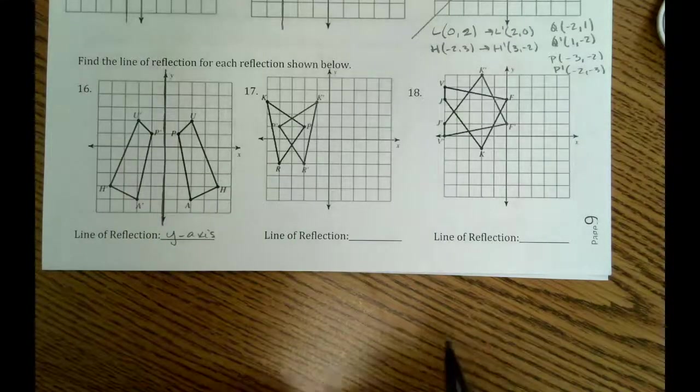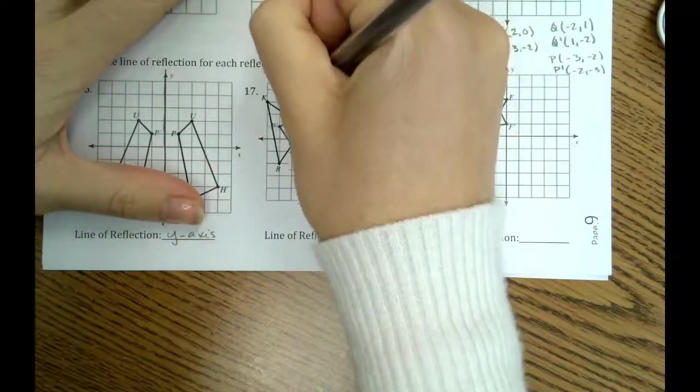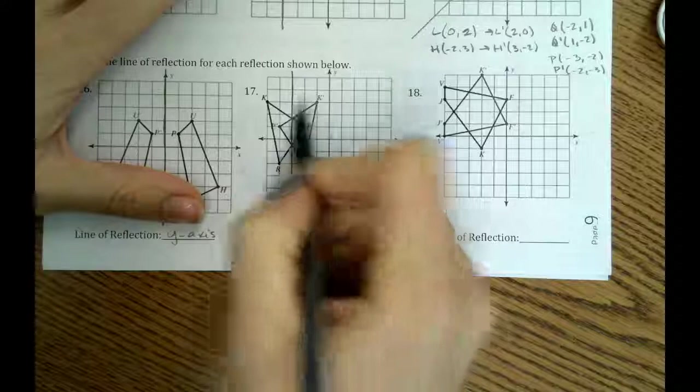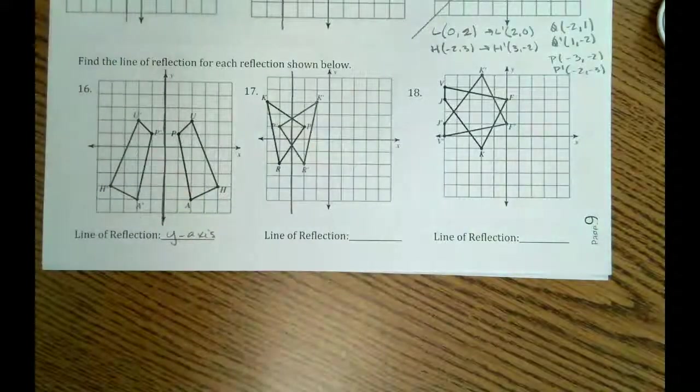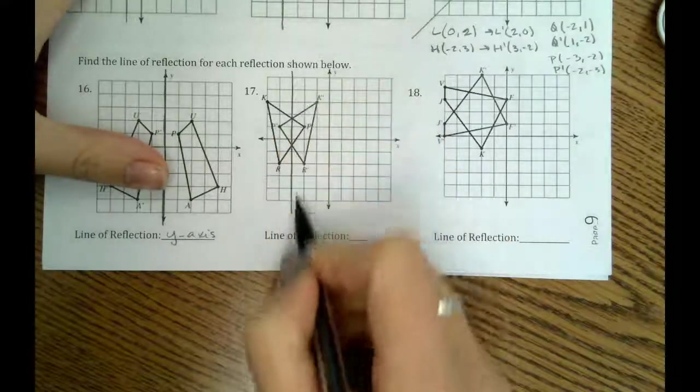Here for 17, it looks like halfway in between p is this line here. So if we count all of those, they would all be equally apart. So this is the line 1, 2, x equals negative 3.